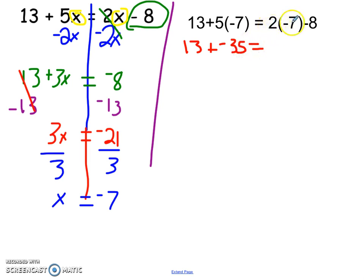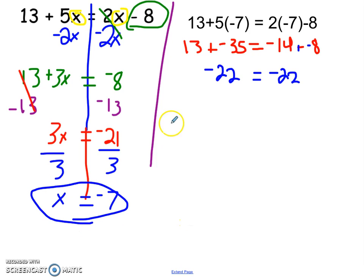On the right side, 2 times negative 7 is a negative 14. I have 13, I owe 35, so I'm still going to owe 22. On the right side, I owe 14 and I owe 8. I owe 14 and I owe 8, I still owe 22. Since both sides are the same, negative 7 is the correct answer.